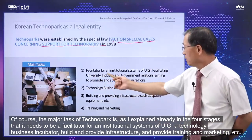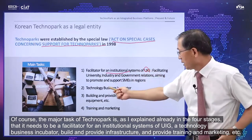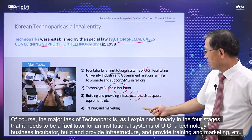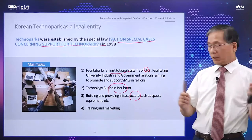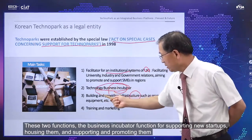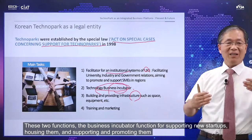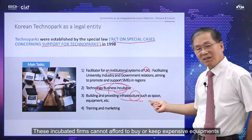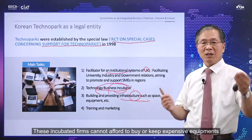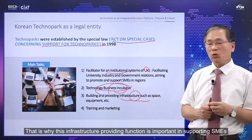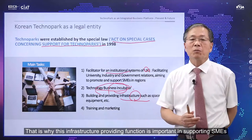The major tasks of the technical park — as I explained in the four stages — include facilities, industrial systems, UIG cooperation, tech incubation, building provision, and training and marketing. Business incubator functions support new startups by housing and promoting them. Since incubator firms cannot afford to buy or maintain expensive equipment, the infrastructure provider function is very important in supporting such small and medium enterprises.